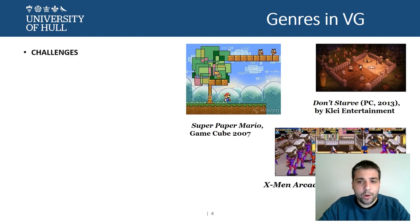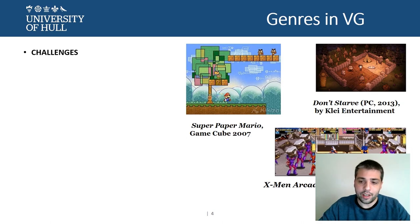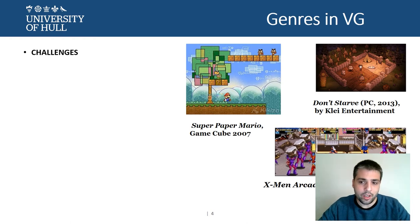My approach is going to be slightly different. I'm going to start by defining the components of the games, and then later we are going to go to the definition of genres, depending on how they are represented in their mechanics. So we first define the mechanics, then we'll define the genres.